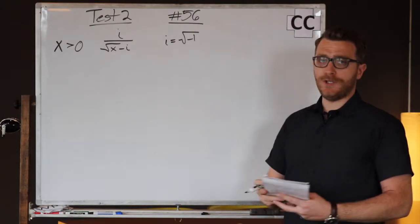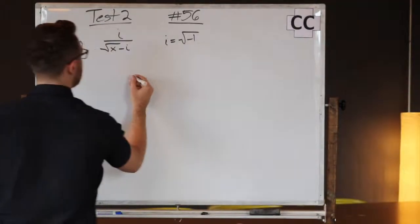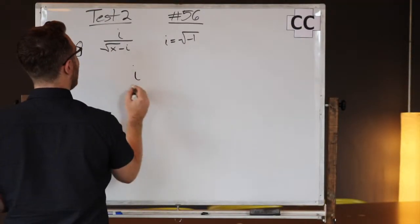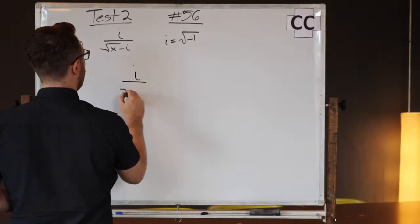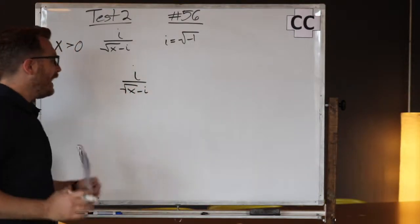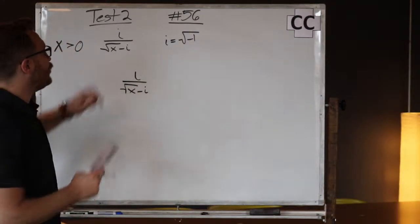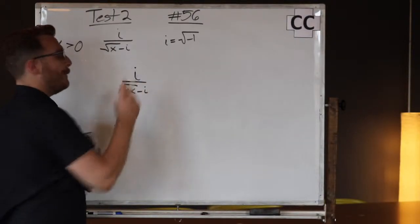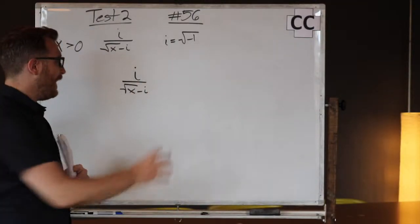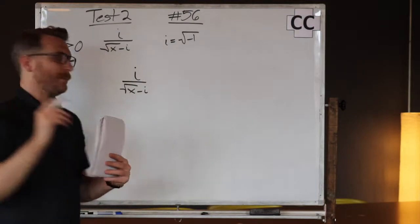So what we're going to do, I'm going to take this expression that we have originally, i over √x minus i. Since it's a fraction, I'm going to change it by multiplying it by another fraction that allows us to simplify the expression.